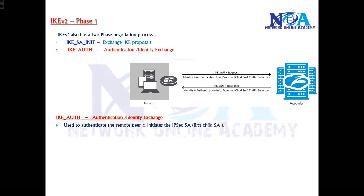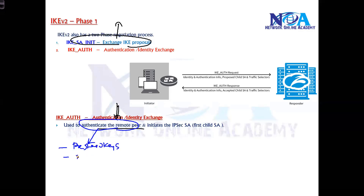In the IKE Auth step, messages three and four are encrypted, unlike the previous messages. Authentication options include pre-shared keys on both sides, digital certificates, or the EAP authentication method available in IKEv2, which allows integration with existing LAN authentication methods for VPN use. IKEv2 also supports asymmetric authentication, where different authentication methods can be used on each side.